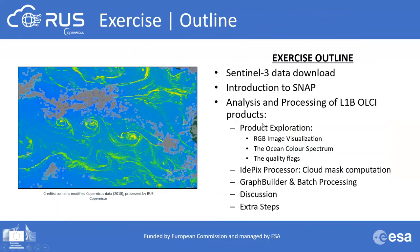We can now move on to the practical part. During the exercise, I will first present the Sentinel-3 data download, then introduce the SNAP software, and then analyze and process the Level 1B OLCI products. This will include generation and visualization of RGB images, quantification of the ocean color spectrum on various pixels, a presentation on quality flags, how to compute a cloud mask, how to process multiple products to retrieve the MCI automatically, and a discussion of the obtained results.